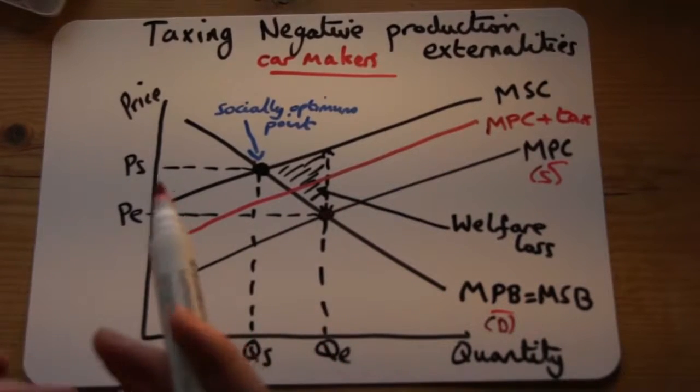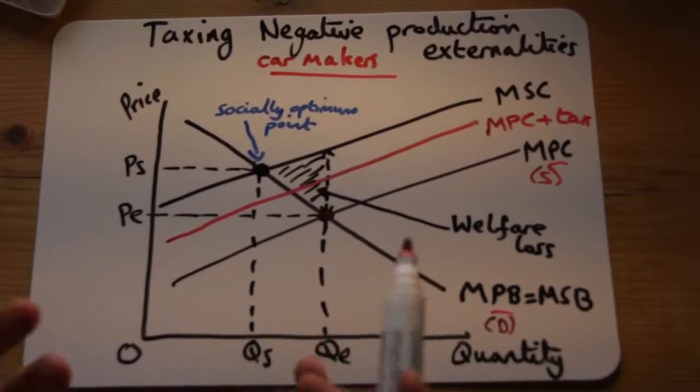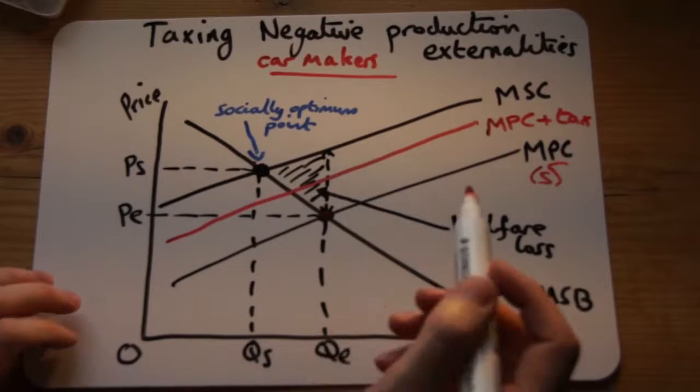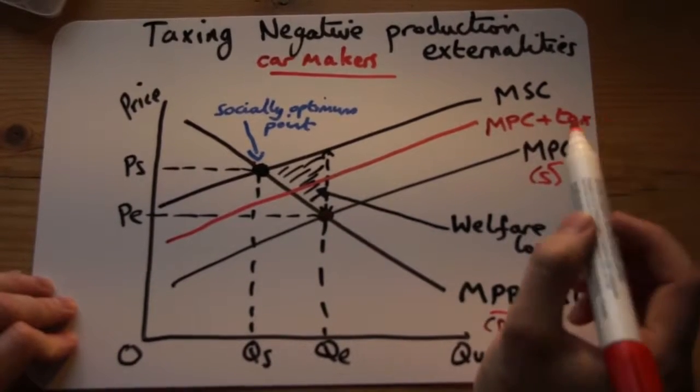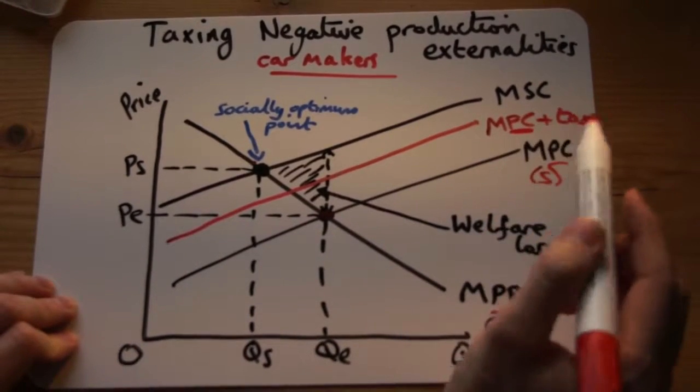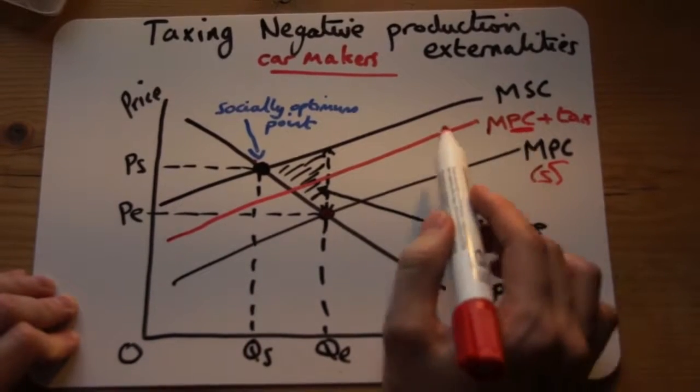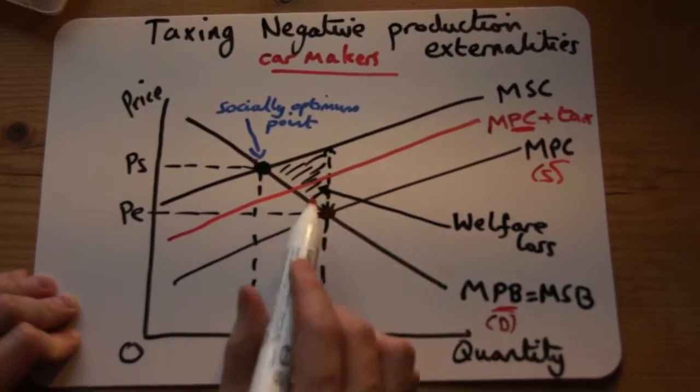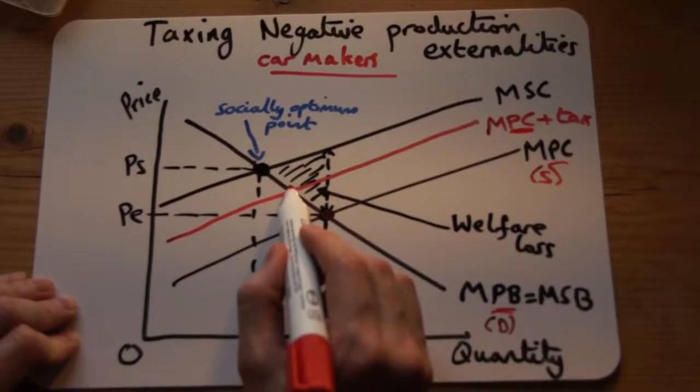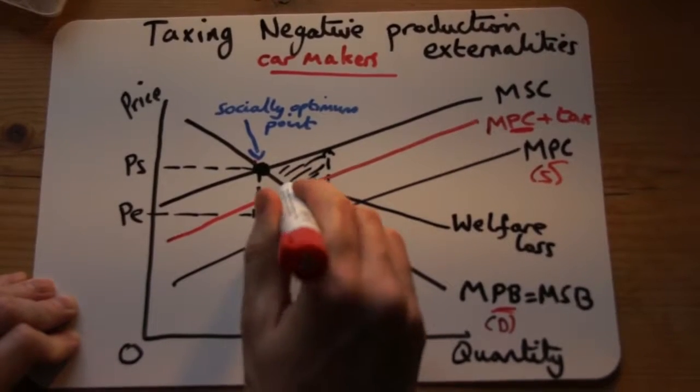So what we need to do then is find what's now the new free market point with the tax in there as well. The free market point is where the private cost equals the private benefit. The new private cost line is this one. The old private benefit line is the same, so the new point is here.